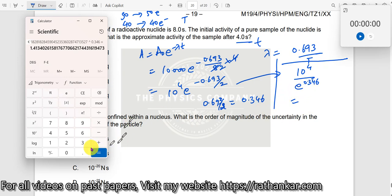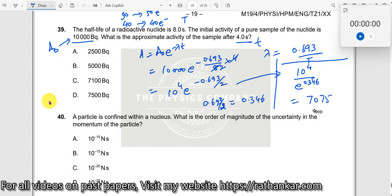Now it is coming in the denominator. I should take the reciprocal. Take the reciprocal, then multiply this by 10,000. I get the answer 7,075. The closest answer here is 7,100 Becquerels. The answer is C.